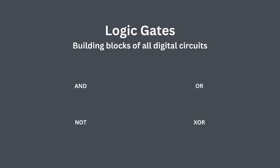We are starting with the building blocks of all digital circuits, which are logic gates. These gates form the foundation of how computers make decisions, perform calculations, and process information. The key gates we will explore today are the AND gate, OR, NOT, and XOR. We will go over how each gate works and build circuits using Logisim.